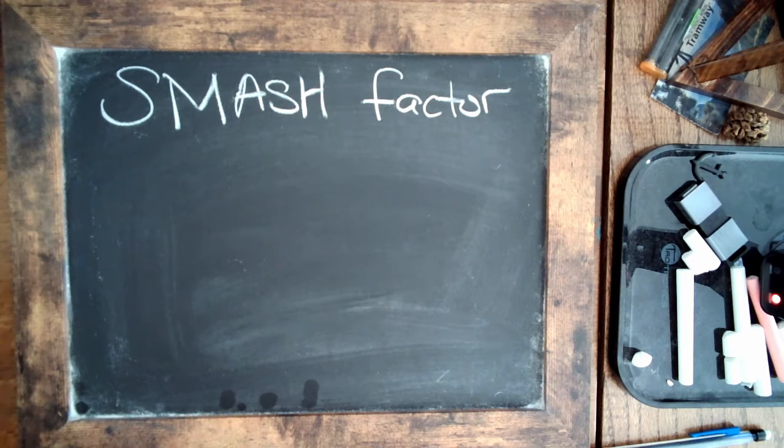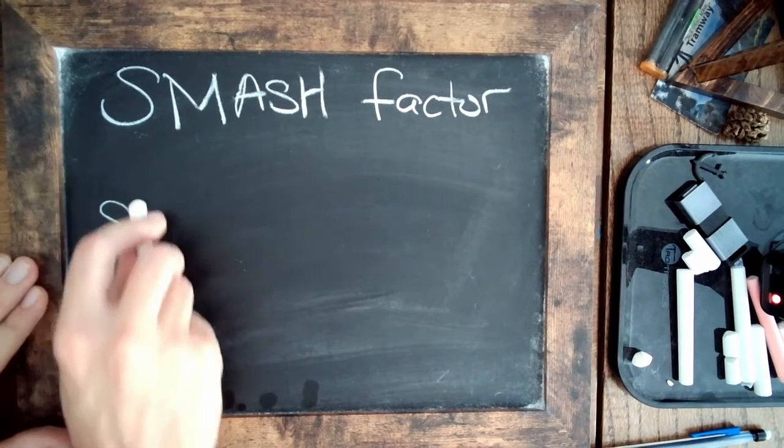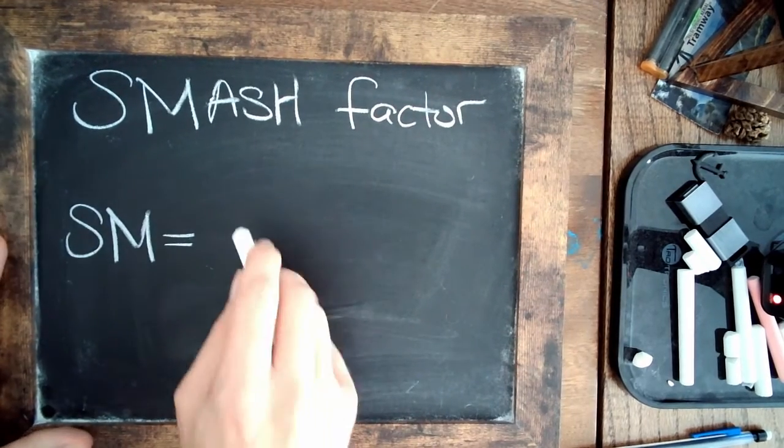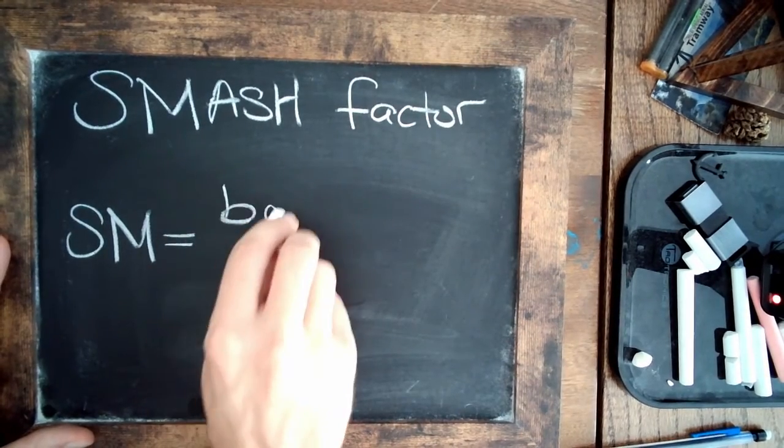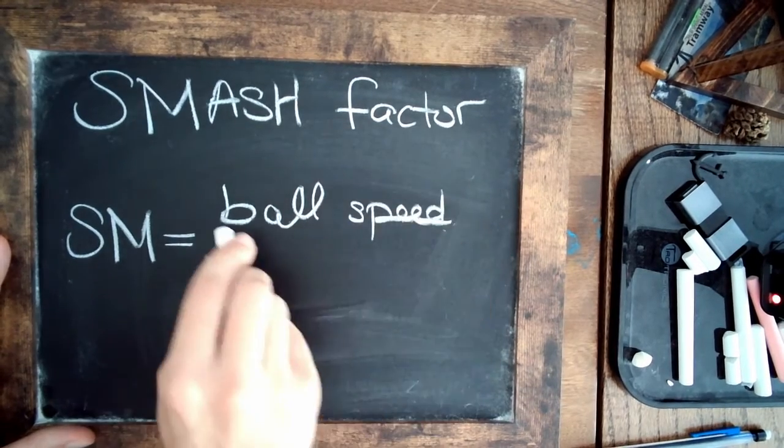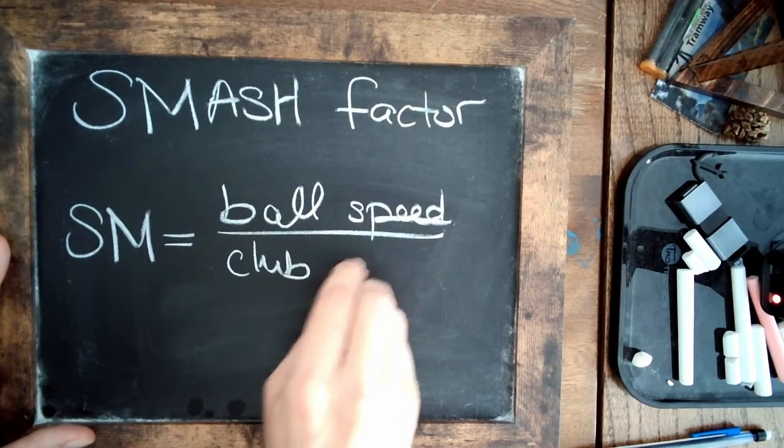Okay, welcome back everybody. In this video we're going to be taking a look at the smash factor. So we'll call this SM and it's simply equal to the ball speed divided by club speed.